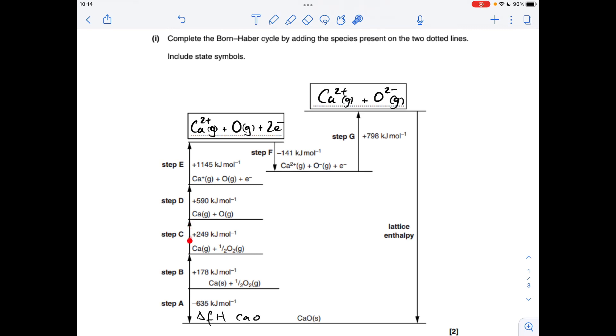Moving on to step C, so this one here. So what's changing? We're going from half a mole of O2 gas to one mole of O gas. So you're going from the element to one mole of gaseous atoms. That's the atomisation of oxygen.